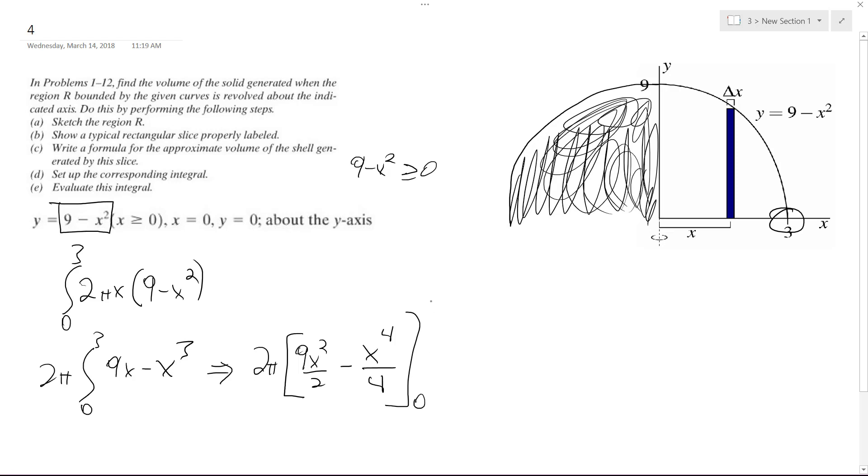0 to 3. So what we end up with is 2 pi, so 9 times 3 squared is 9, over 2 minus 3 to the fourth, 81, over 4.